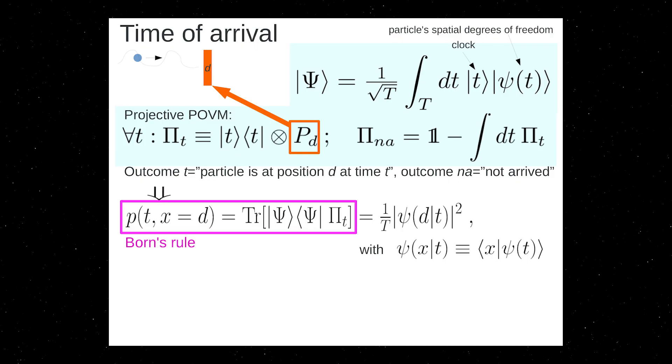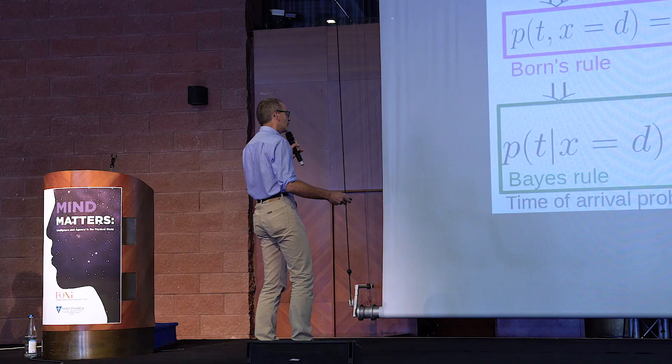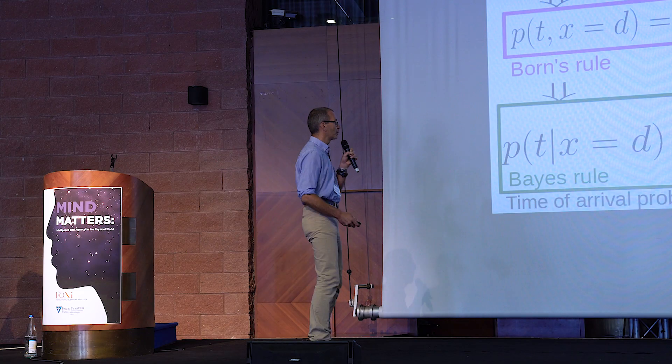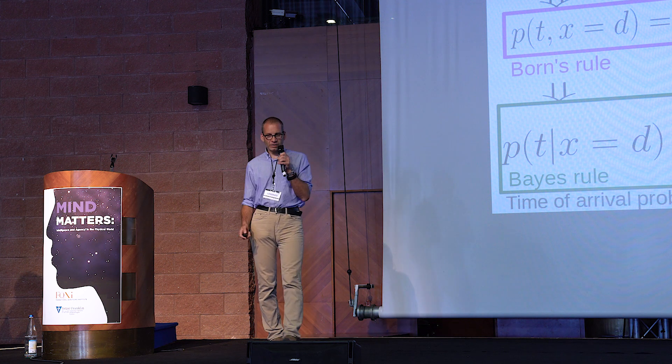This is a joint probability. Then you can obtain the probability just for the time, the probability that the time is t given that the particle has arrived just through the Bayes rule. And again, it's the square modulus of the probability amplitude suitably normalized. And that's it.